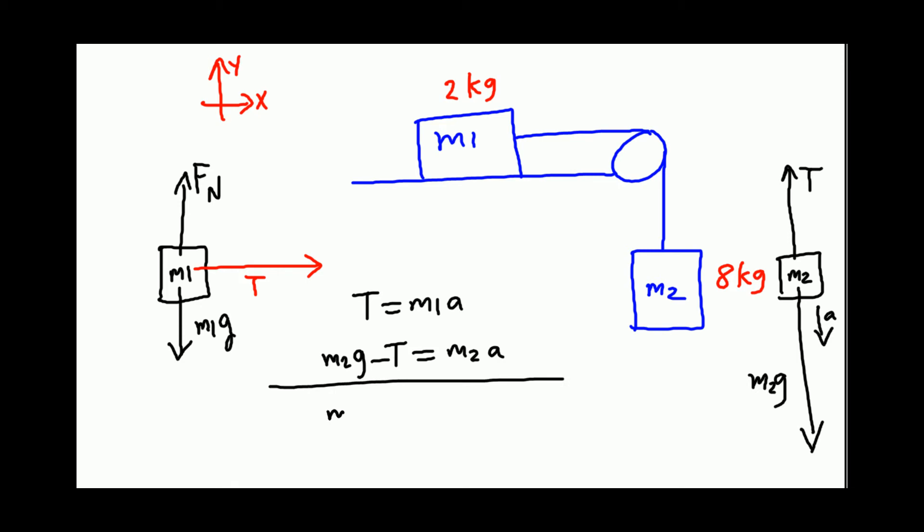You add and we get M2g equals M1a plus M2a. So M2g equals M1a plus M2a, or M2g equals a times (M1 plus M2).